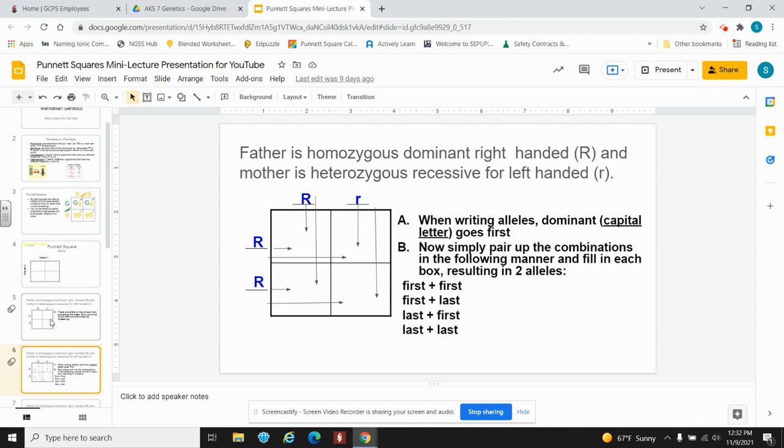To help you account for all of the possible combos, you can use a simple rule. We can use first plus first, big R, big R, first and last, big R, little r, last and first, but remember we're going to put the big R first, big R, and then last and last, putting the big R first, big R, little r.